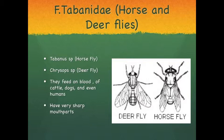Female horse and deer flies are very vicious and painful biters. They feed on the blood of cattle, horses, hogs, mules, dogs, and even humans. These flies cut through the skin with their knife-like mouthparts, efficiently designed for sucking blood. When they fly away, drops of blood fall from their mouthparts onto the skin, creating other feeding sites for other insects.